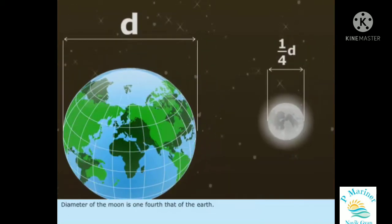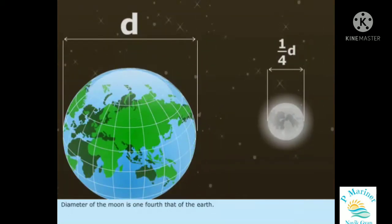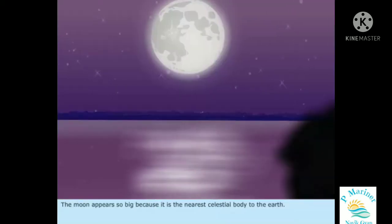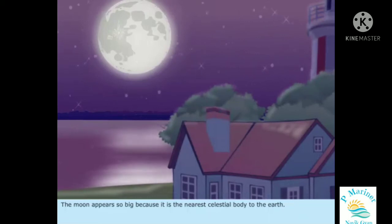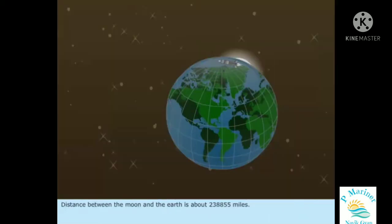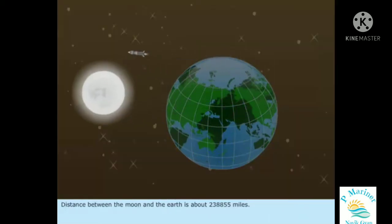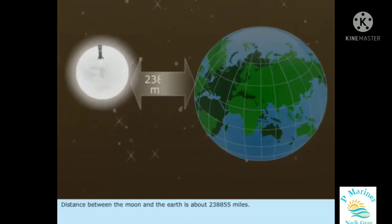The diameter of the Moon is one-fourth that of the Earth. The Moon appears so big because it is the nearest celestial body to the Earth. The distance between the Moon and the Earth is about 238,855 miles.